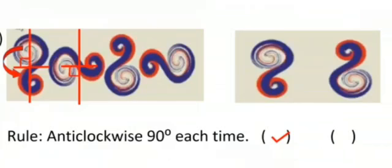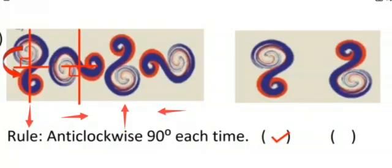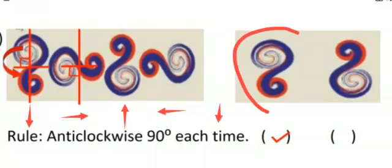Now check this pattern — it is also moving by 90 degrees but in the anti-clockwise direction. The first shape is in this direction, then moving 90 degrees, third position like this, fourth position like this. We can check the direction of arrows — it is moving anti-clockwise. So the next shape will be the first one. The rule is anti-clockwise 90 degrees each time.